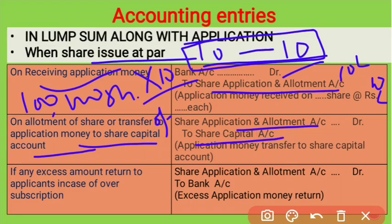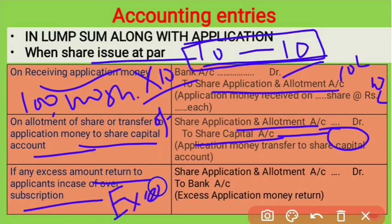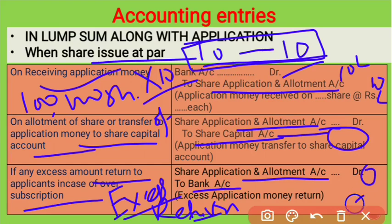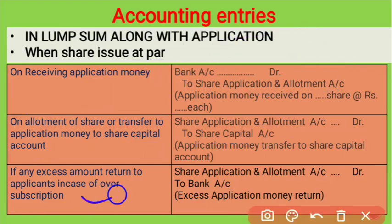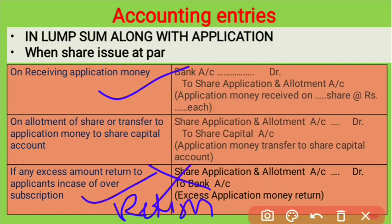In the share capital account, only as much money is transferred as the company intends to issue shares for. If there is any excess amount in case of over-subscription, it must be returned to the applicants. The entry for return is: Share Application and Allotment Account debit to Bank Account. This third entry is only needed when there is a return — if there is no return, only the first two entries are required.